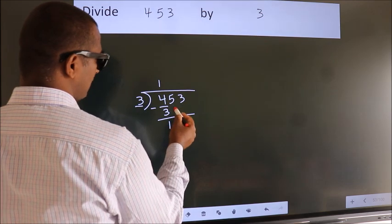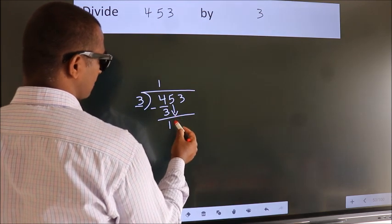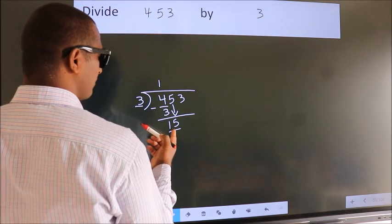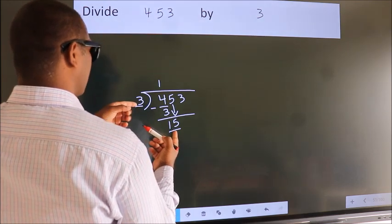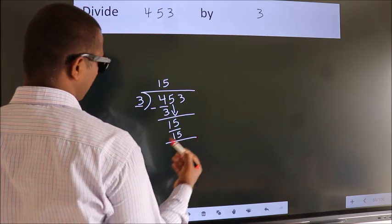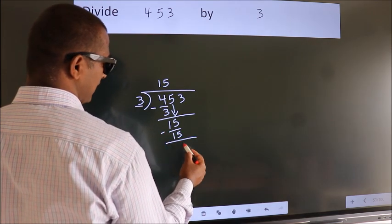After this, bring down the beside number. 5 down. So, 15. When do we get 15? In 3 table, 3 fives, 15. Now, we subtract. We get 0.